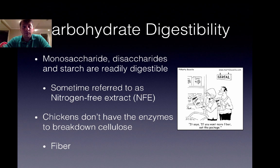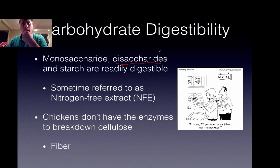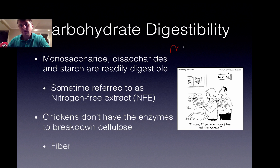We have our monosaccharides or disaccharides and starch, and they're easily digestible. Monosaccharides include glucose, galactose, and mannose. Starch is taken in by the bird and then broken down by pancreatic amylase. One of the breakdown products is the disaccharide maltose, which is made up of glucose and glucose. This will be the disaccharide that makes up starch, and so the one often found in the GI tract of chickens.